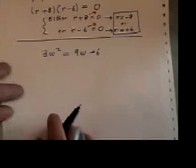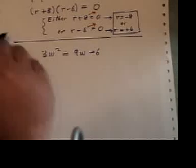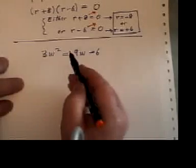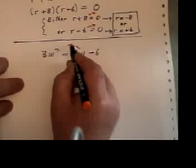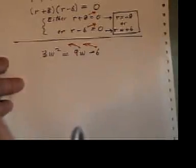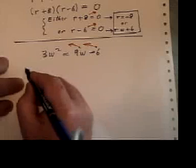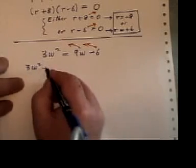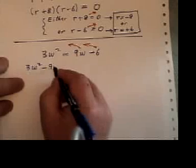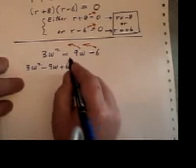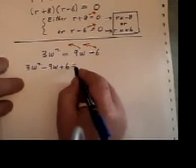This is another example of factoring. This time I have two terms on the right-hand side. I could bring the 3w squared across, but I like to keep it positive. It's easier to factor that way. So I'm going to bring these two fellows over to the left. And because they've crossed the border, please remember that both signs are changed. So plus 9w becomes minus 9w, and minus 6 becomes plus 6.